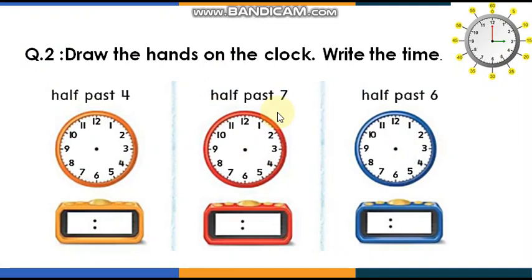This time you're going to draw the hands on the clock, then write the time. When I say half past four — 'half' means the long hand divides the clock into two halves, and the short hand will be pointing toward number four. Let me help you do the first one: half past four.